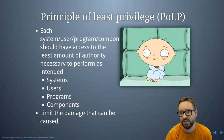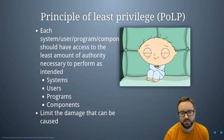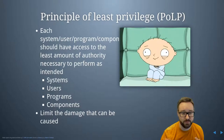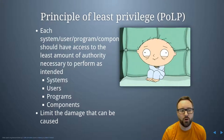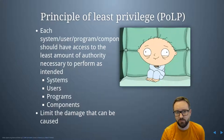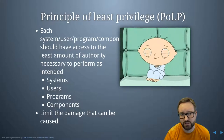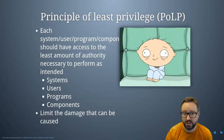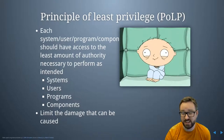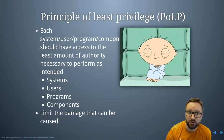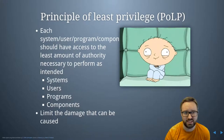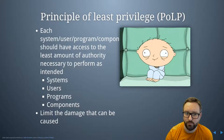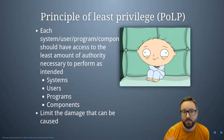First and foremost is the principle of least privilege, and this is really common sense: everything should just have access to the amount of privilege — the permissions and access — that is strictly necessary for the actual intended function to be performed. That includes systems only having access to the network resources they actually require, users only getting access to resources needed for their role, and programs only accessing the resources they need to function correctly.